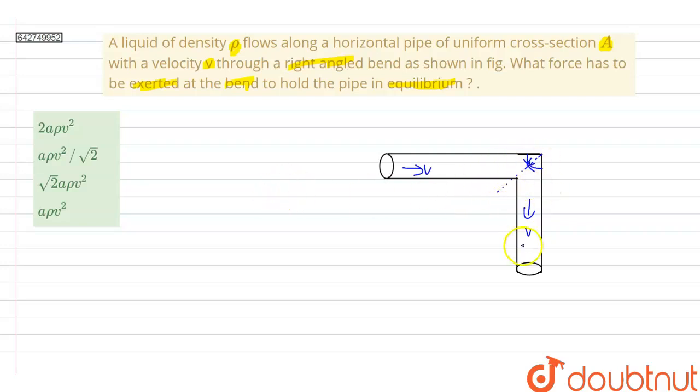So this means to hold this bent pipe in its equilibrium position, we have to exert a force exactly equal to this magnitude but opposite in direction. So let us calculate the value of that force.